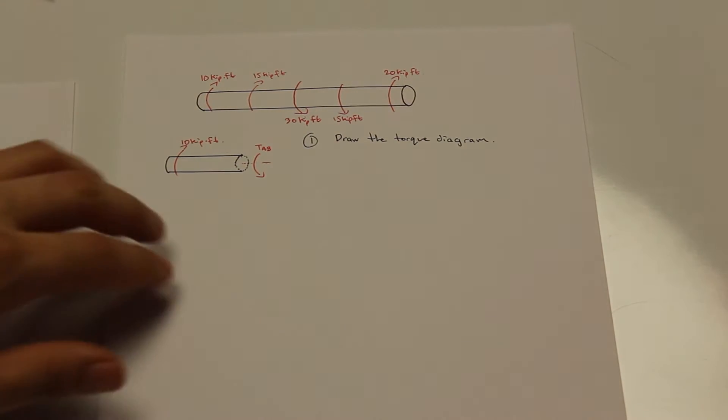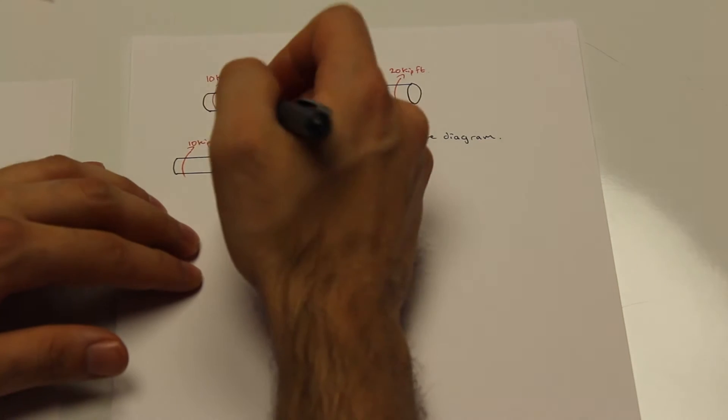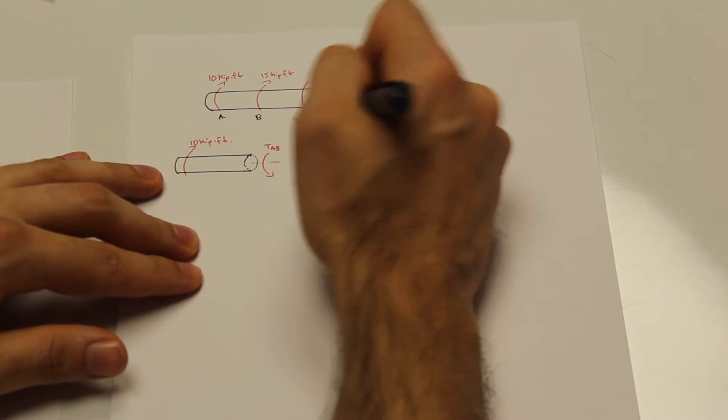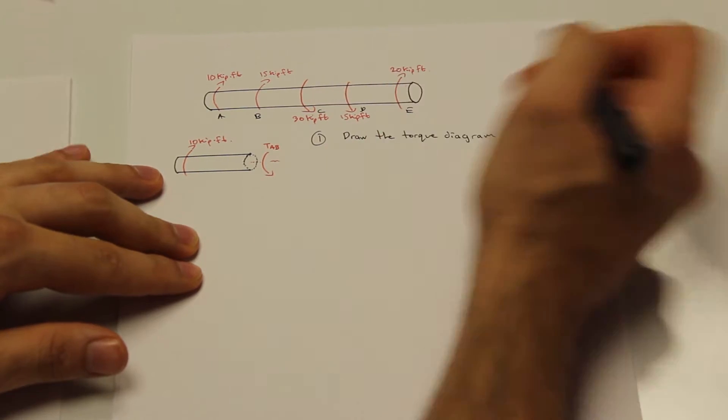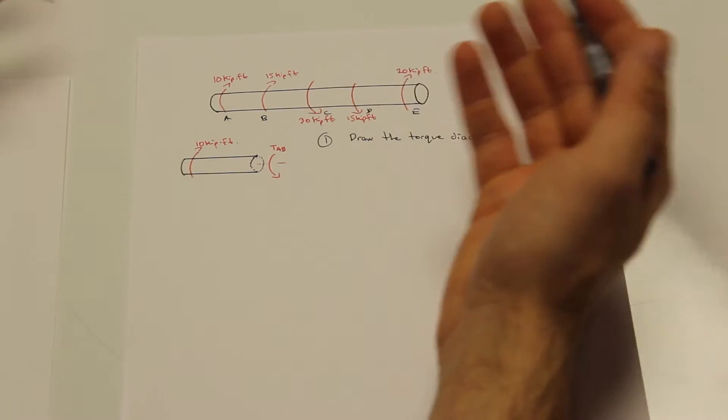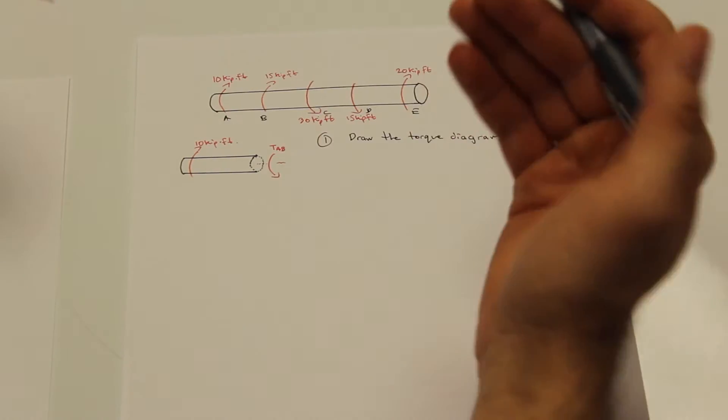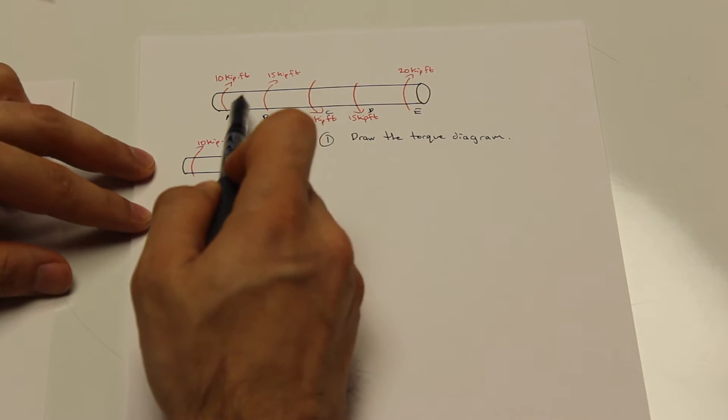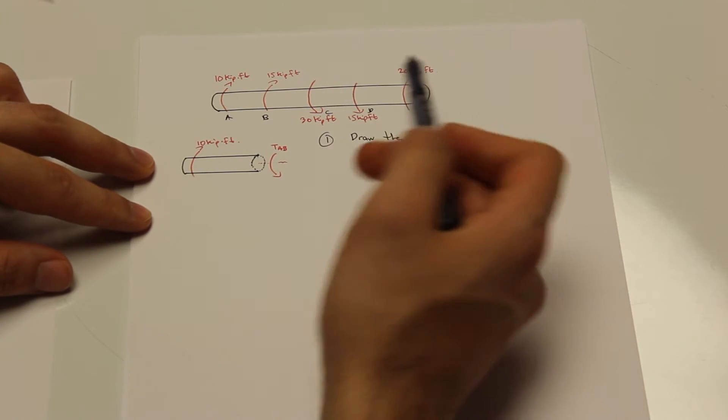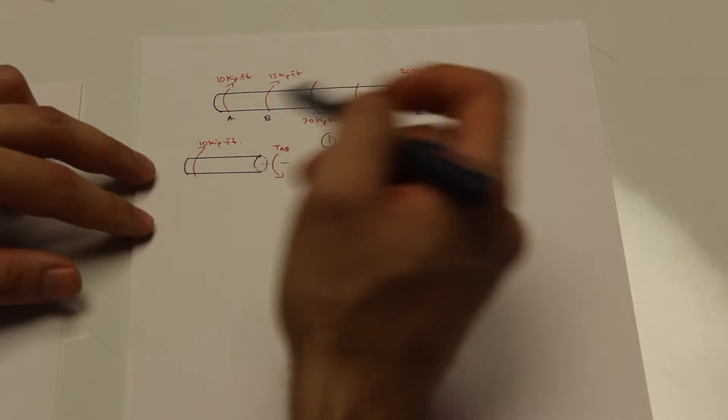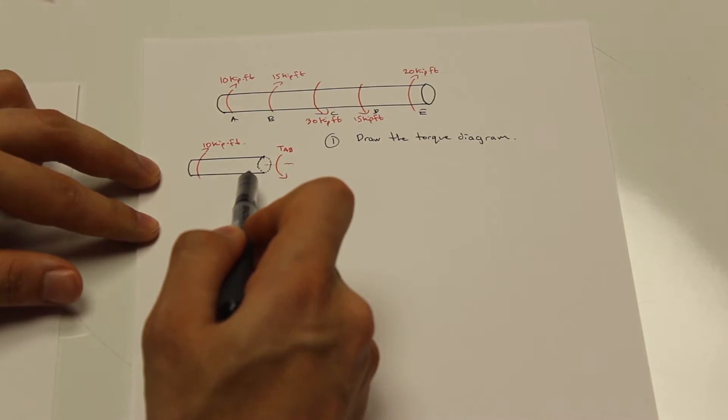So right down here what we're going to do is, let me just label these. This will be section C, D, and E. So what we're going to do is, as we've spoken about before, when we want to find the internal forces of something we're going to have to cut it at a certain point. So to find the internal resisting torque between A and B, we're going to need to cut it in between A and B, and that's what we've done here in this diagram below.